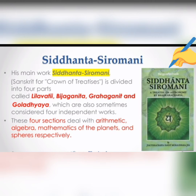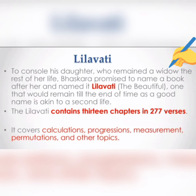The Siddhanta Shiromani is divided into four parts: Leelavati, Beej Ganit, Graha Ganit, and Gola Adhyay, which deal with arithmetic, algebra, mathematics of the planets, and spheres respectively. The Leelavati contains 13 chapters in 277 verses, covering calculations, progression, measurement, permutation, and other topics.